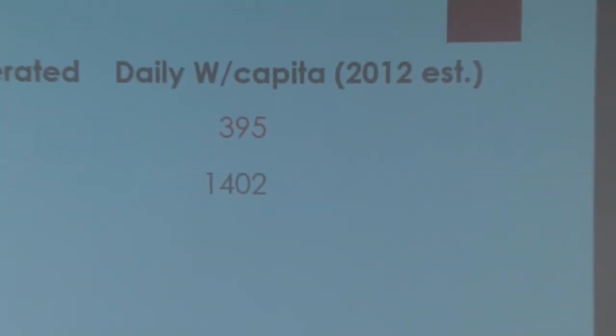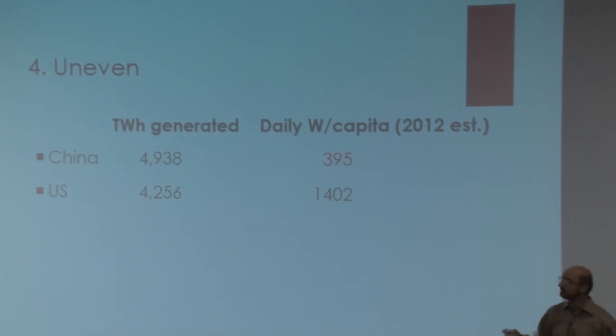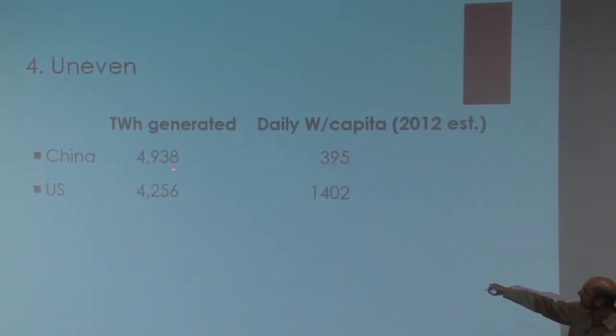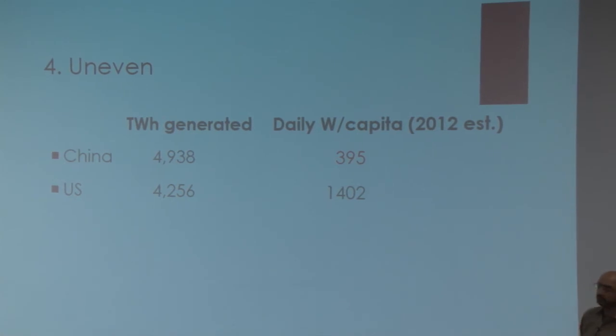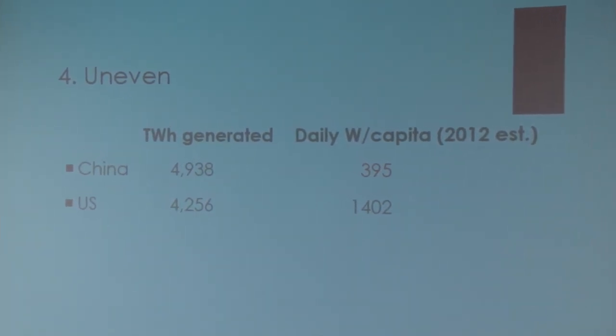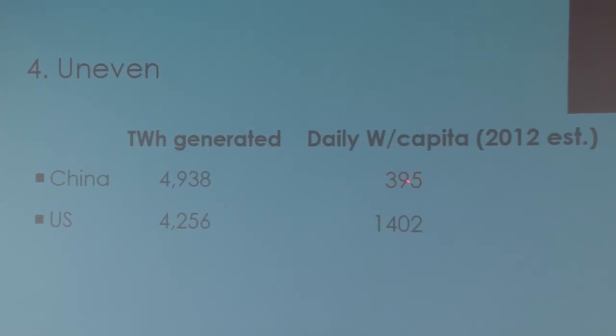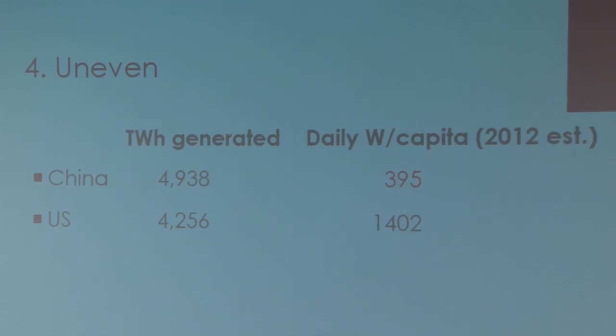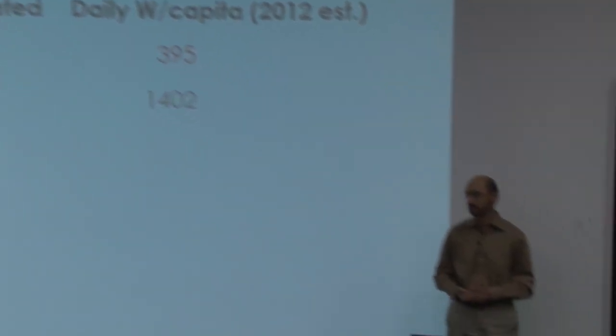It's pretty uneven in terms of the grid. Look at the numbers over here. The total electricity generated in China in 2012, about 4,938 terawatt-hours, actually exceeds the US. But look at the per capita. Per capita, it's only 395. It's quite a bit below this. It's almost a fourth. So if China comes up over here, you can imagine how much more carbon is going to be generated. And China's putting in one coal plant every week. So this unevenness reflects the fact that there's going to be more carbon being generated by the grid worldwide.